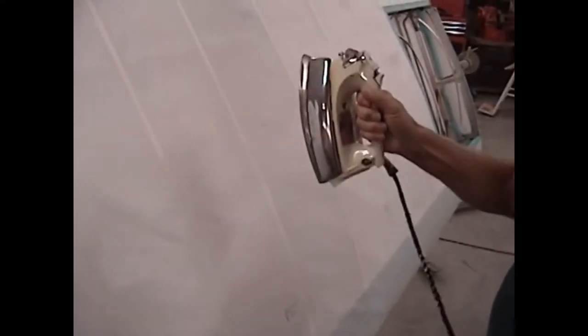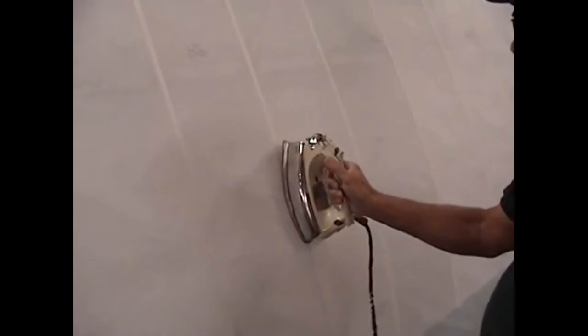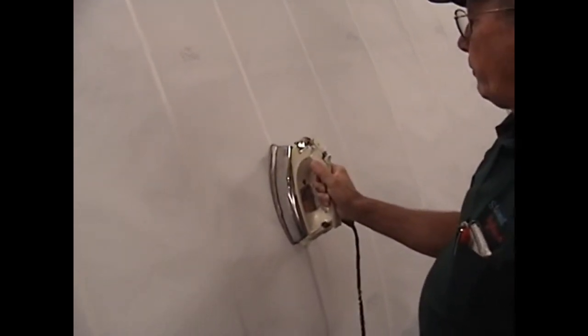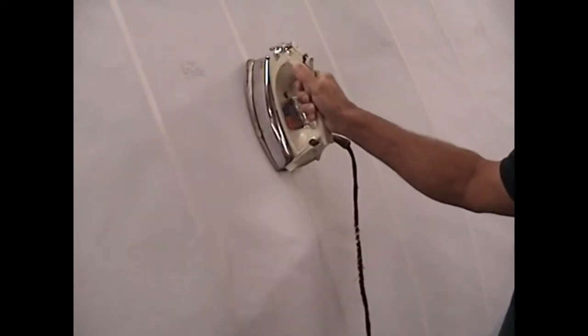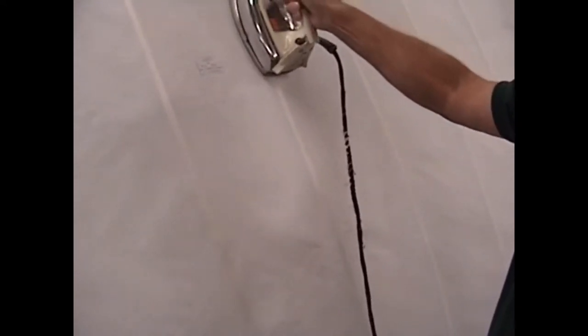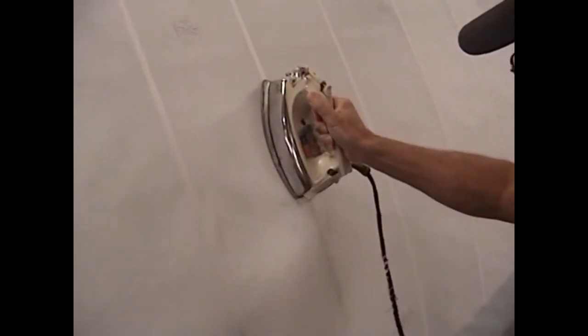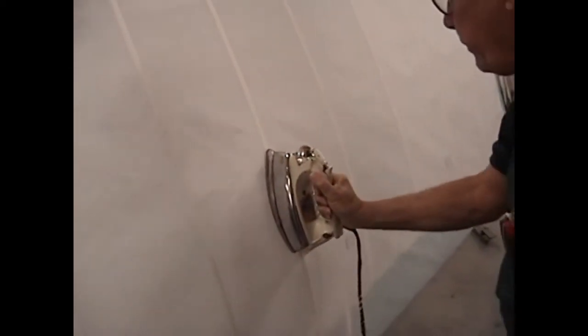We're going to start again. We've got the tank base. We're going to treat this as the end of the wing right here. We'll come down about centered. We've got our iron set for about 250 for the first shrink. We'll start over the rib. The rib is a pretty effective heat sink, so it takes a little longer to let the heat penetrate through the fabric to get that initial shrink started.